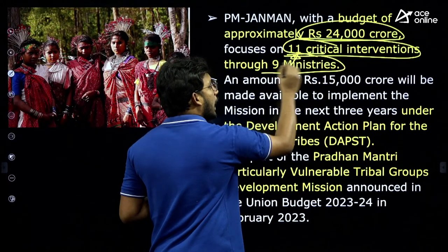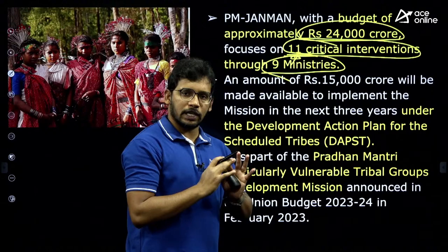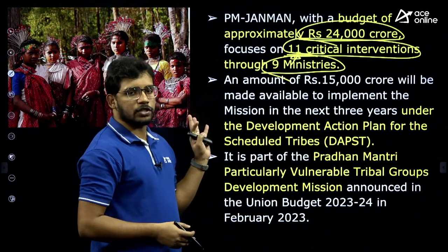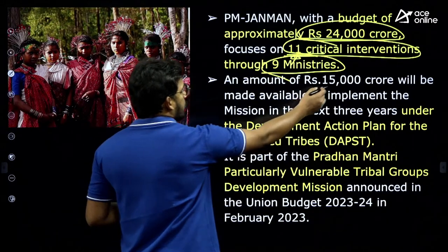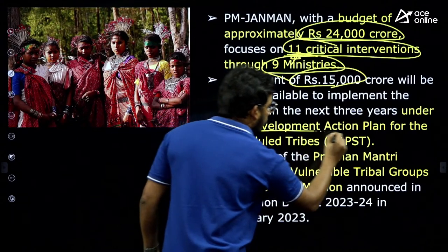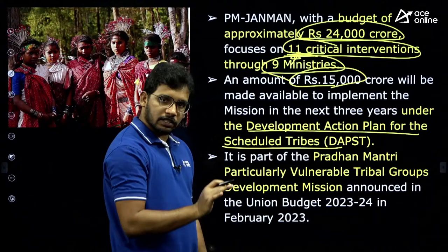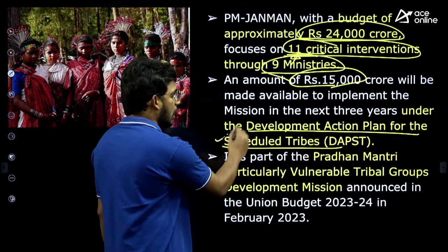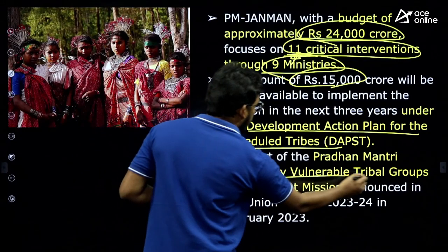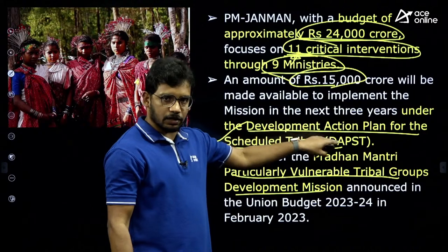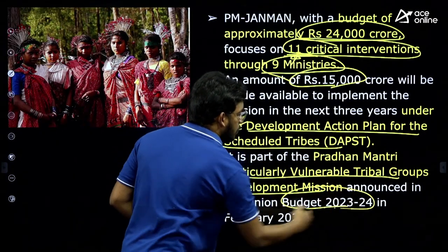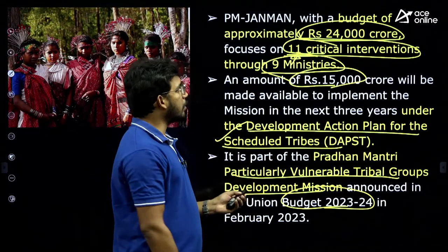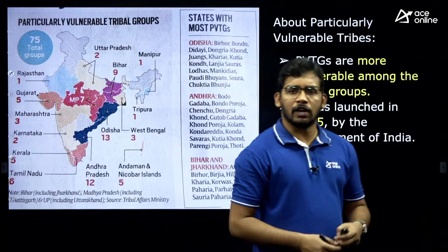Some components are completely funded by central government as Central Sector Schemes; others are Centrally Sponsored Schemes where 60% is funded by central and 40% by state governments. The scheme was launched on November 15, 2023 in Jharkhand. Total funding is around ₹24,000 crores. Eleven areas are identified — housing, sanitation, electricity, telecom connectivity, etc. Nine ministries coordinate this scheme, managed by the Ministry of Tribal Affairs.